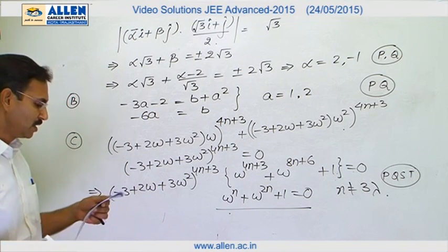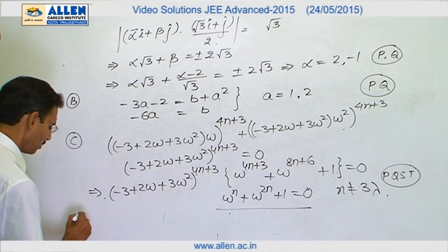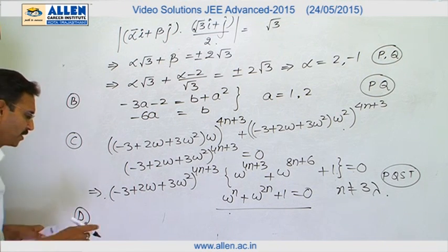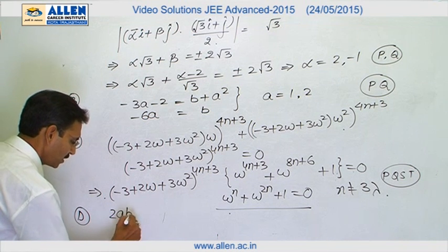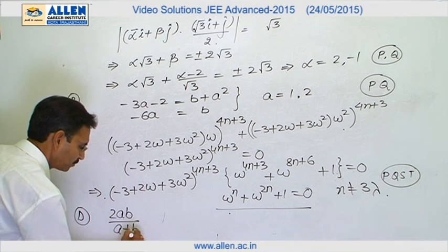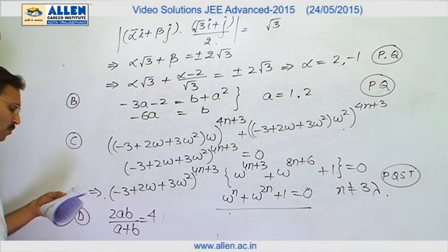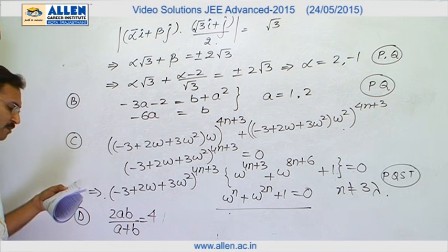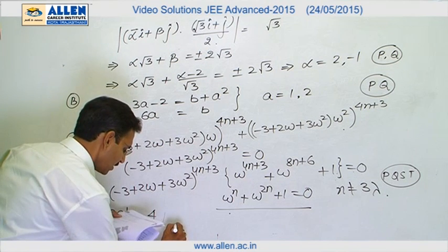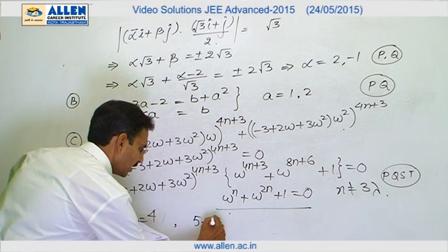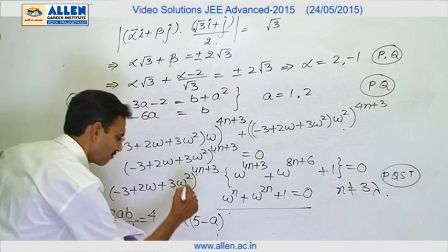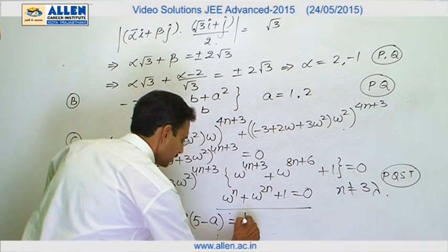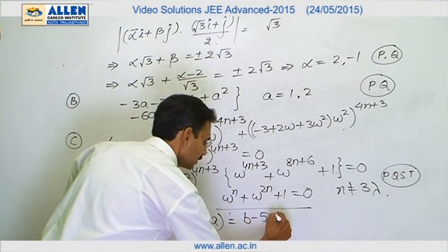Now, the D part, last part of this match the column. It is a very routine kind of problem. The harmonic mean of a and b which we used to write as 2ab upon a plus b is given as 4. And 5, 4 more terms are in arithmetic progression which gives us a relation: 5 minus a, twice of 5 minus a is equal to b minus 5. These are 2 relations.